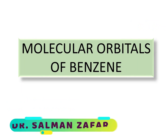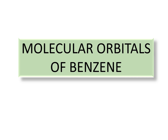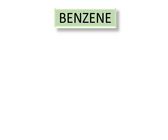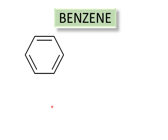Hello and welcome to another video on the basic concepts of organic chemistry. Today we will learn how to draw the molecular orbitals of benzene. The molecule of benzene is a cyclic molecule with six carbon atoms, and there are three double bonds present in the ring which are in conjugated form — a double bond, a single bond, then a double bond, a single bond — so there is an alternating double and single bond system, which means the system is delocalized and resonance is present.